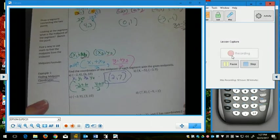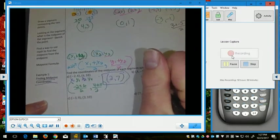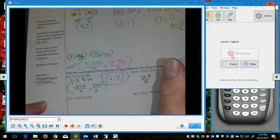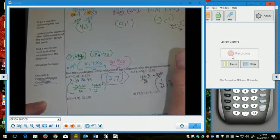All right. So, for letter B, if you did 4 plus negative 3 over 2, you should have had 1 half for the x-coordinate. And negative 5 plus 9 over 2 should have given you 2. 1 half comma 2 is the answer for letter B.